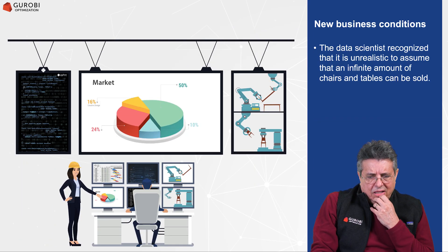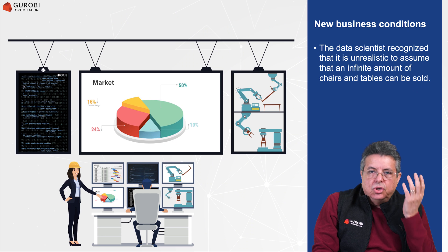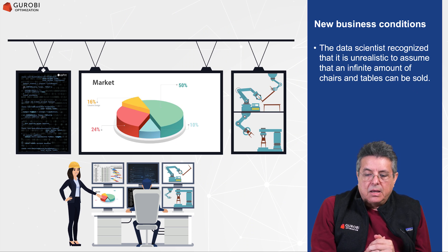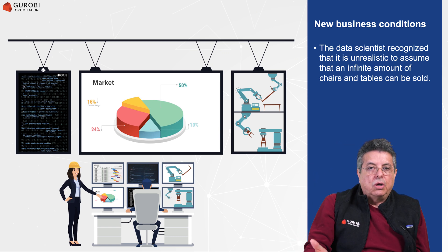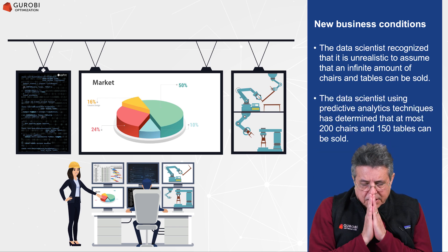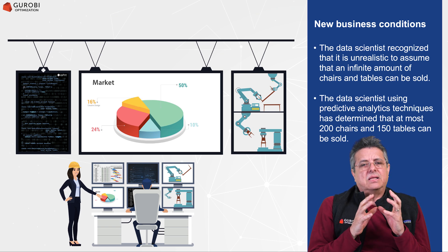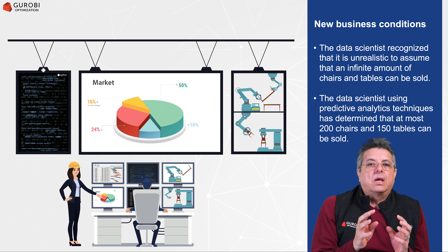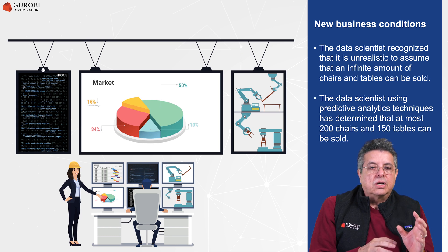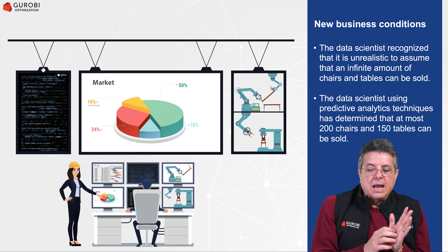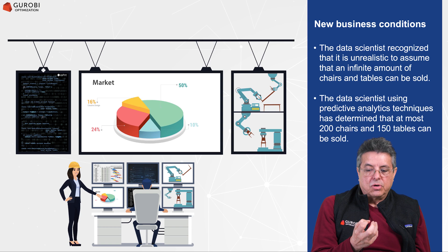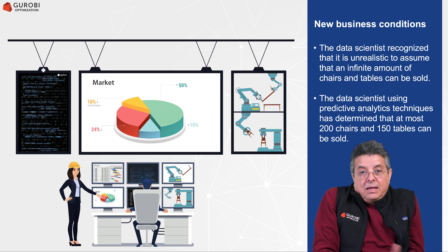When the data scientist realizes this, she says: why is the problem unbounded? It's unrealistic to assume we can build an infinite number of chairs and tables and sell all of them. So she uses predictive analytics to estimate the market size per week. She identifies that at most 200 chairs can be sold per week, and at most 150 tables can be sold per week. Let's make this problem realistic.